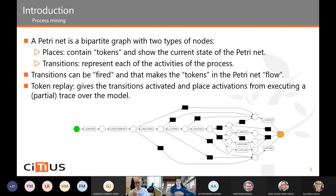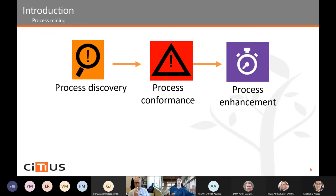There is a technique called Token Replay that gives us the Transitions Activated and the Place Activation from executing a partial trace of the model. We have a trace and can retrieve which transitions have been activated by following the series of activities of that trace. We can also retrieve which places have had a token in the past. Process mining has three subfields: process discovery, process conformance, and process enhancement. Process conformance checks how well the process model represents the reality of the log — for example, how well traces align with the model or how much extra behavior the model allows.